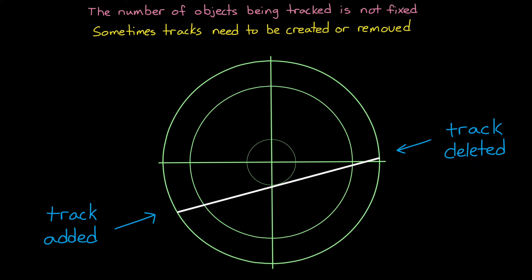Now, this creation and deletion doesn't just happen along the edge of the field of view of the sensors. We may have to create and delete tracks anywhere. For example, an airplane may land or take off within the radar range. So, we need to think about the criteria for creating and deleting object tracks.